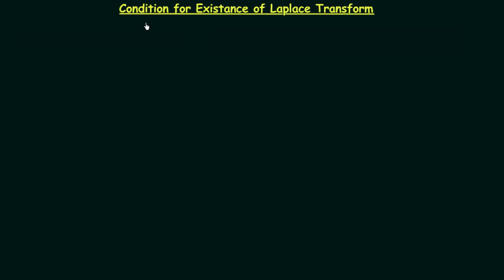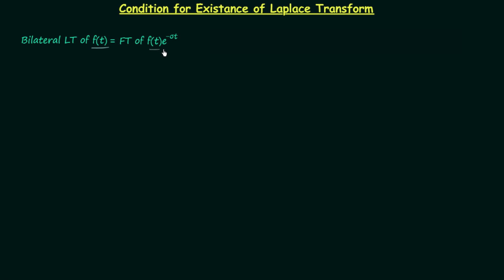In this lecture we will talk about the condition for existence of the Laplace transform. In the previous lecture we saw that the bilateral Laplace transform of a time domain signal F(t) is equal to the Fourier transform of the same signal when multiplied by e^(-σt).